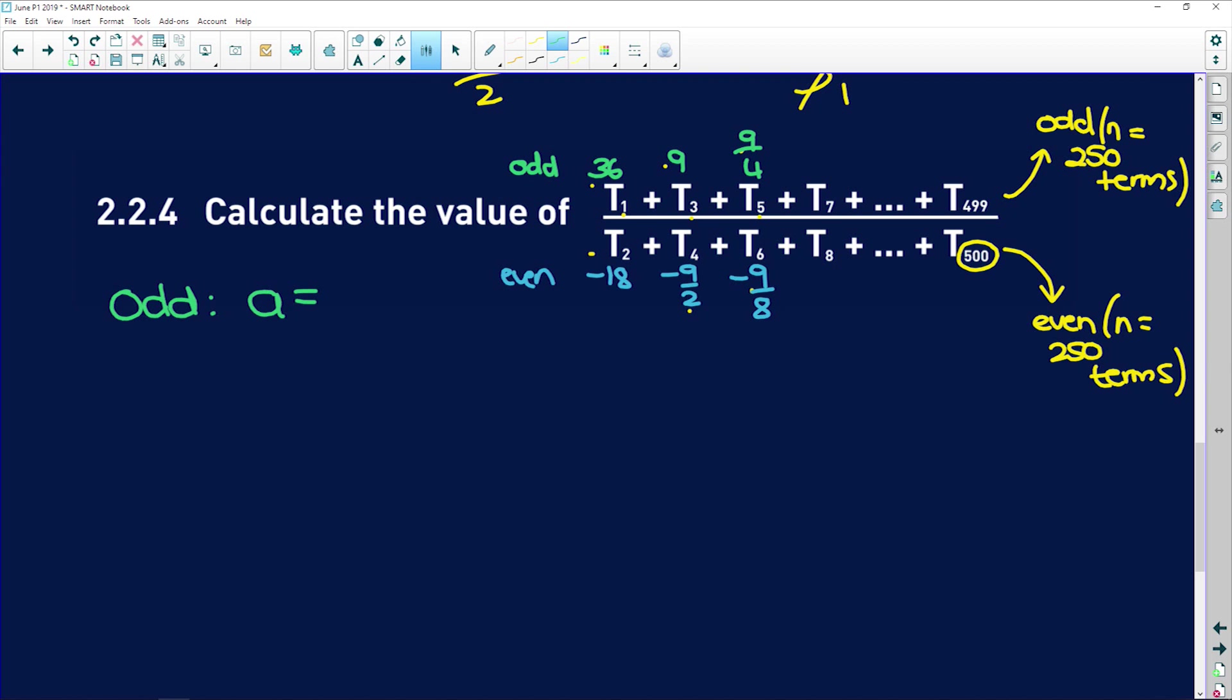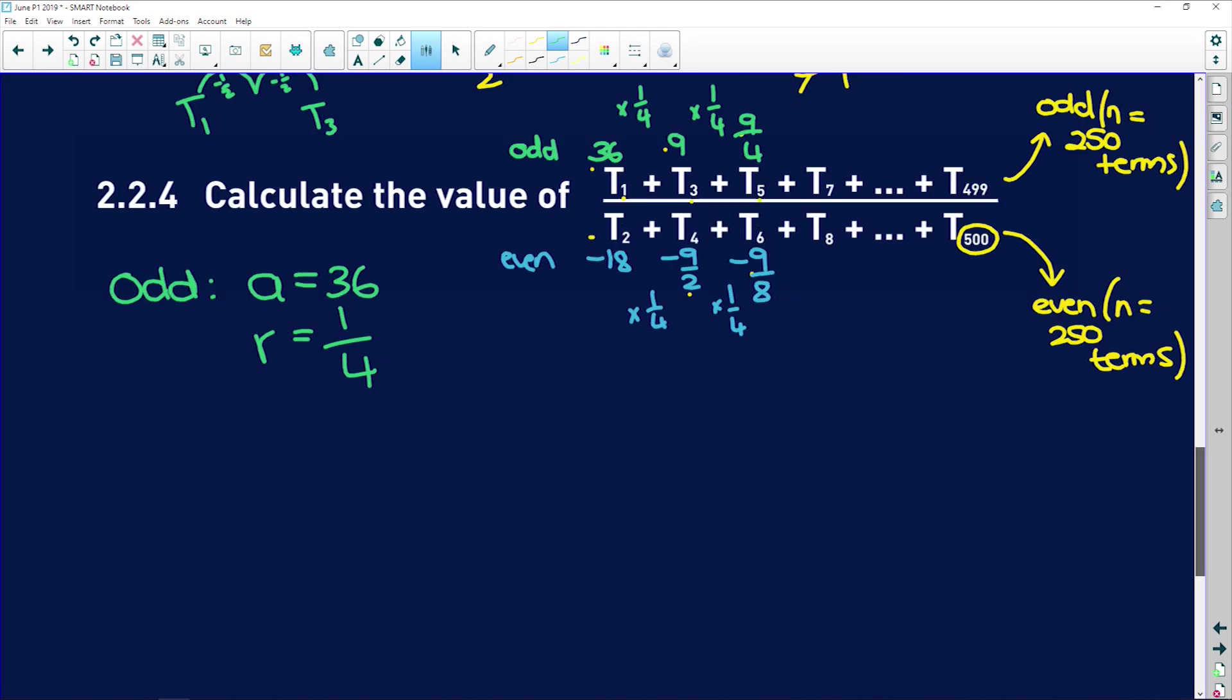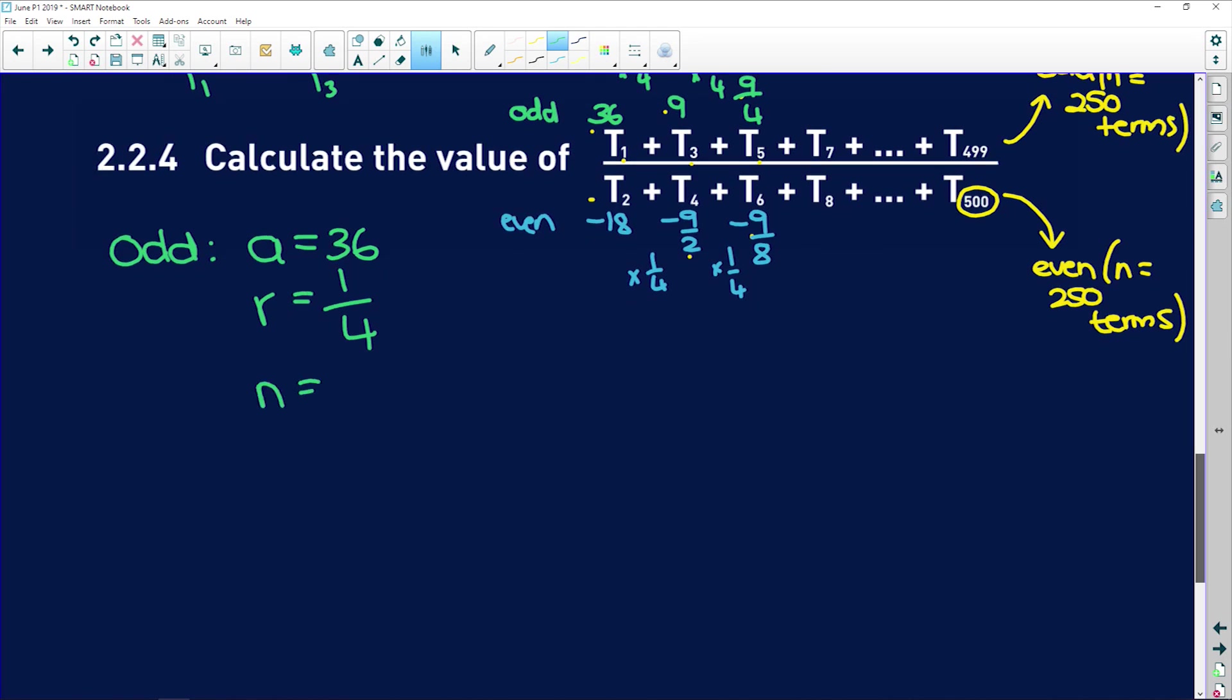So for the odd, the first term is equal to 36. The ratio between the odd numbered ones here, we're timesing by 1 over 4 this time, because we're skipping a term. We're going from term 1, we're skipping 2, and we're going to term 3. So remember, there was a ratio of negative 1 half here, twice. So in between these, it's 1 over 4. Same as in the denominators. So r is equal to 1 over 4. And also n is equal to 250.